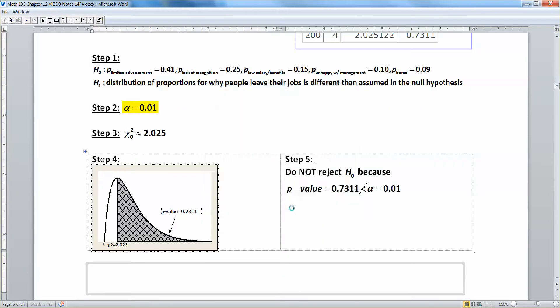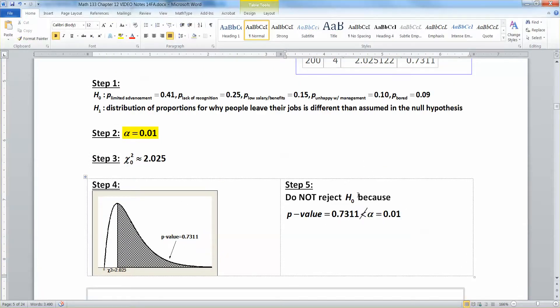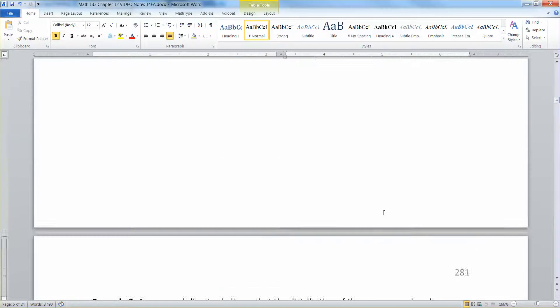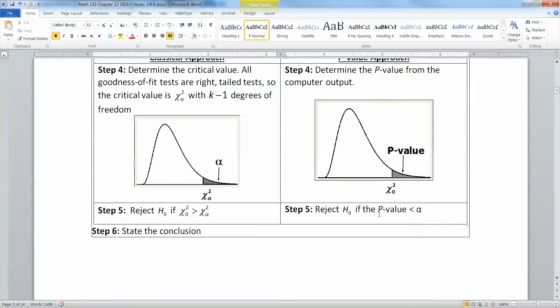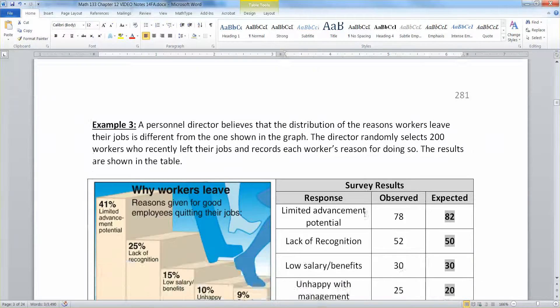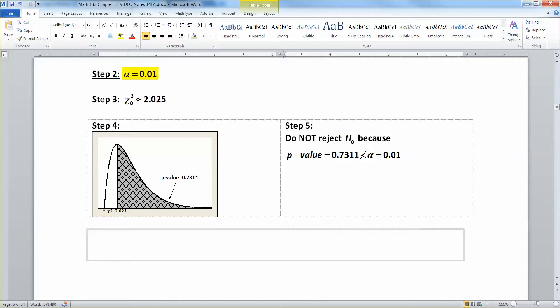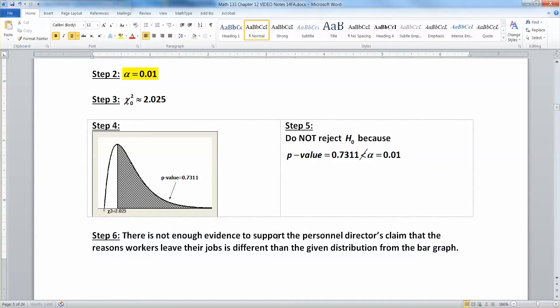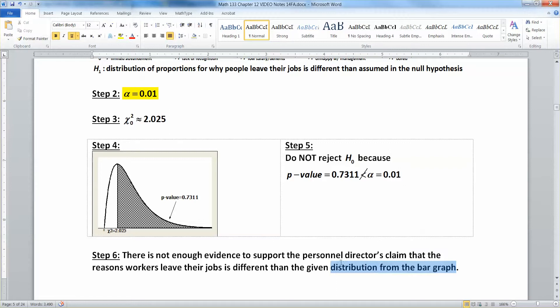This means we are going to not reject the null hypothesis because our p-value is not less than alpha. That doesn't change no matter what kind of hypothesis test we're doing. We always reject if our p-value is low. We want p-values low—the lower the better. Our p-value is very large, it's 73%. So we are not going to reject the null hypothesis. That means that there is not enough evidence to support the claim that the reasons workers leave their jobs is different than the given distribution from the bar graph or the null distribution. Basically you're saying it's not what the personnel director is claiming. They're claiming that it's different than that proportion seen in that bar graph, and we're saying well, it might be the case that it's different, but we don't have any evidence to support it.